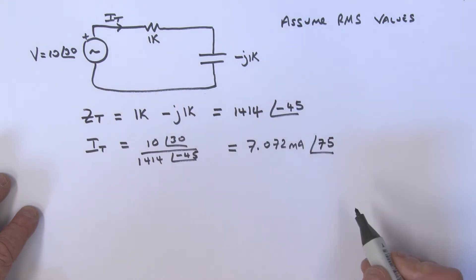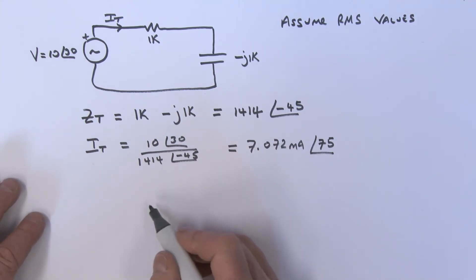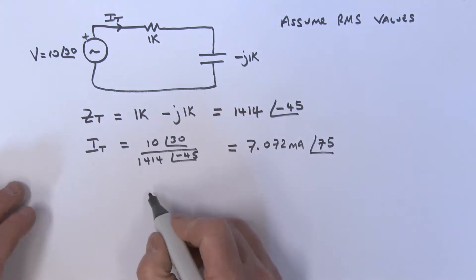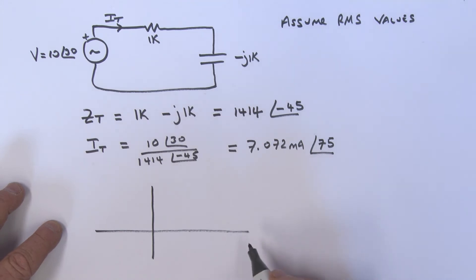Now if we kind of just plot these, or the value of, let's say, the voltage V and the current IT, what's it going to look like? Well, let's just go ahead and do that for a moment. So our graph would look like this, where we would have V.